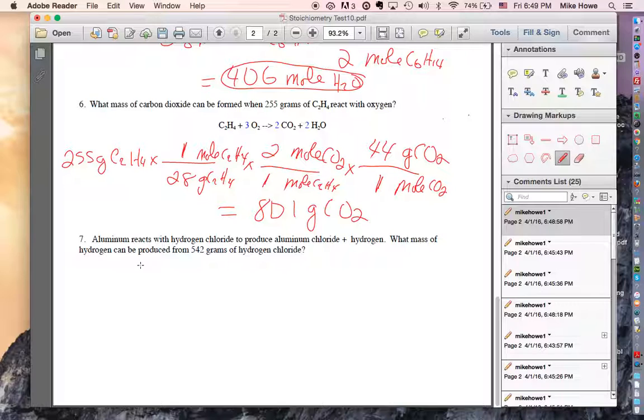This one was the hardest question on the test because you had to write your own equation. So it says aluminum plus hydrogen chloride. Now you notice that I am writing the symbols in first. So I've been working with a few of you on this. So symbols first, then charge, then formulas, then balance. Alright, so here's my symbols. Okay, now charge. Since aluminum is by itself, it's zero.